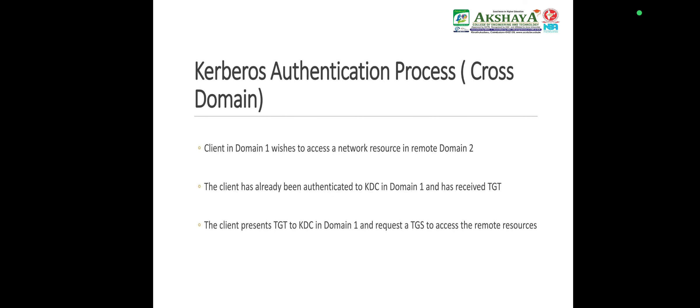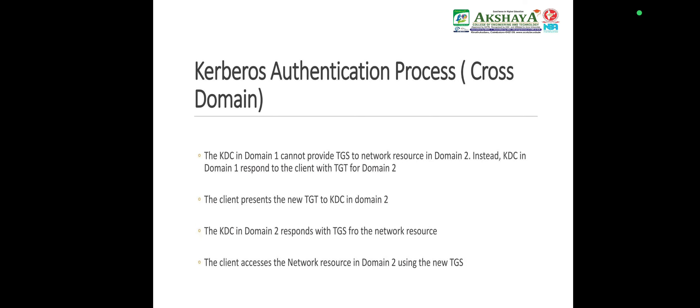Kerberos authentication process and cross-domain: A client in domain 1 wishes to access a network resource in remote domain 2. The client has already been authenticated to the KDC in domain 1 and has received a TGT. The client presents the TGT to the KDC in domain 1 and requests a TGS to access a remote resource. The KDC in domain 1 cannot provide a TGS to the network resource in domain 2; instead, it responds with a TGT for domain 2. The client presents the new TGT to the KDC in domain 2, which responds with a TGS for the network resource. The client accesses the network resource in domain 2 using the new TGS.